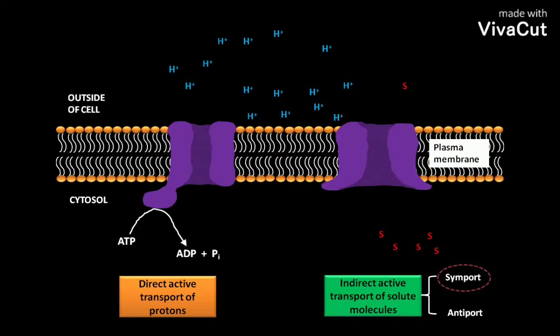This H+ ion movement drives the concomitant transport of a second solute, denoted as red-colored S, such as a monosaccharide or an amino acid, against its concentration gradient. If the second solute molecule is an ion, then it will be transported concomitantly against its electrochemical potential.